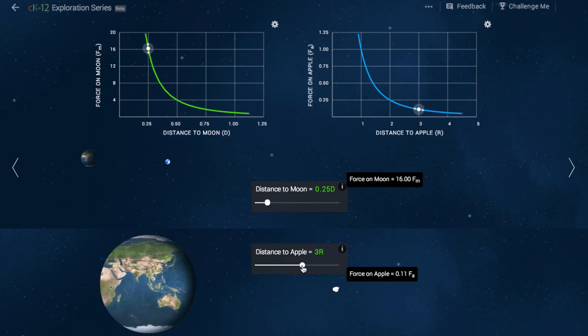If every bit of the earth were pulling on the apple, it would seem like all of those combined forces were coming from the center of the earth. Following this line of reasoning, Newton realized that the law of gravity was universal.